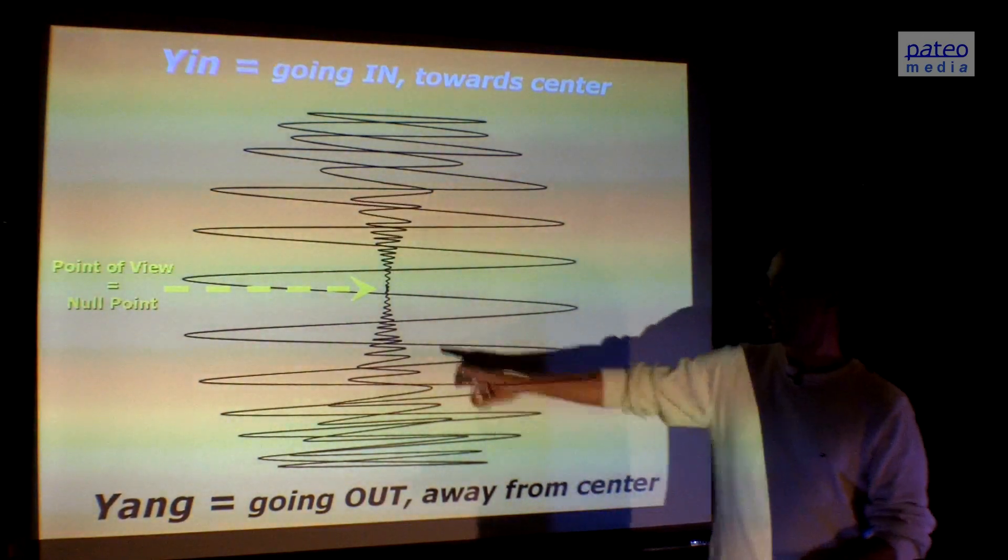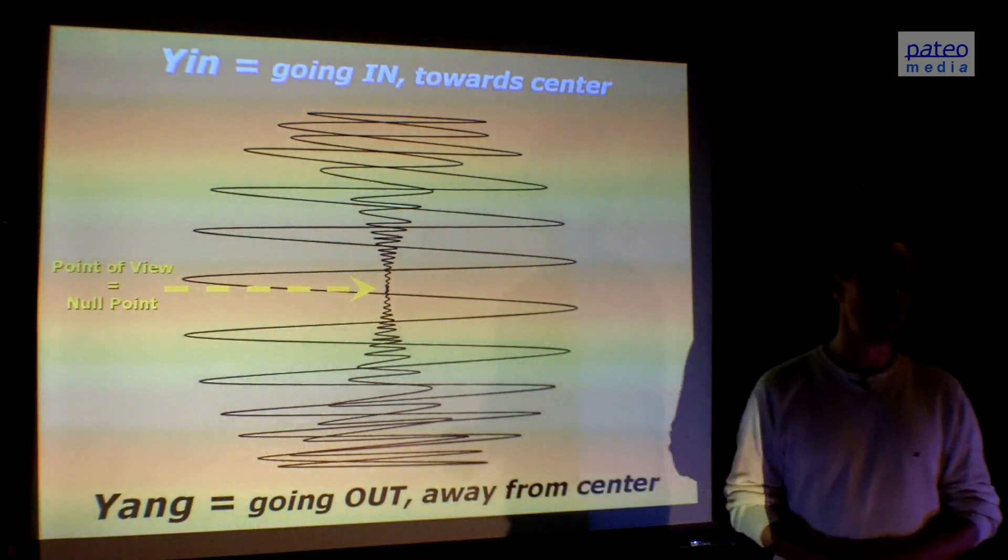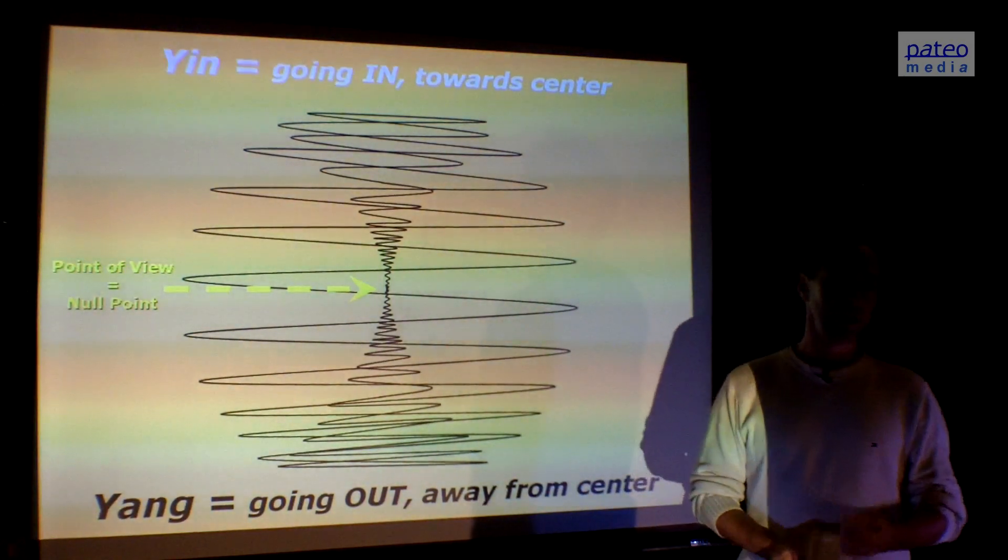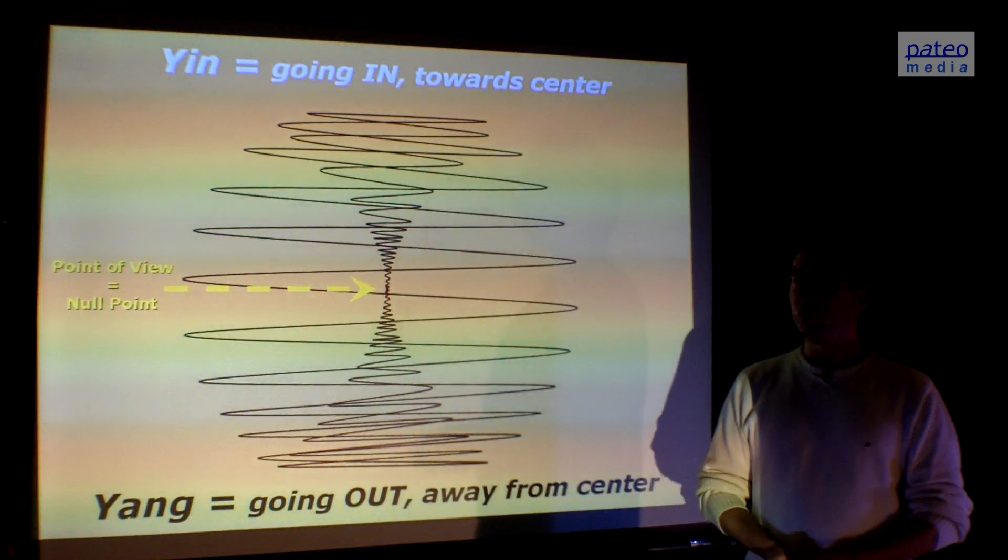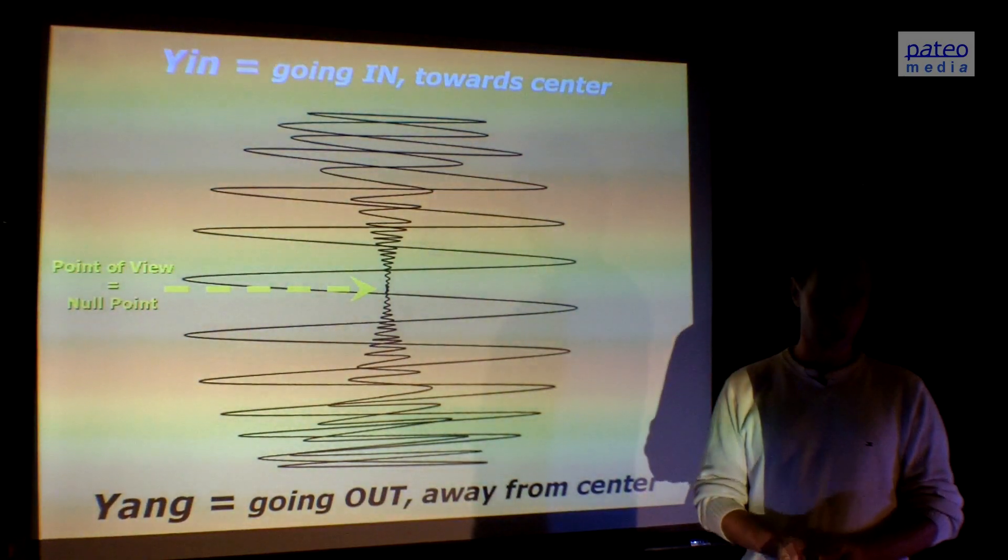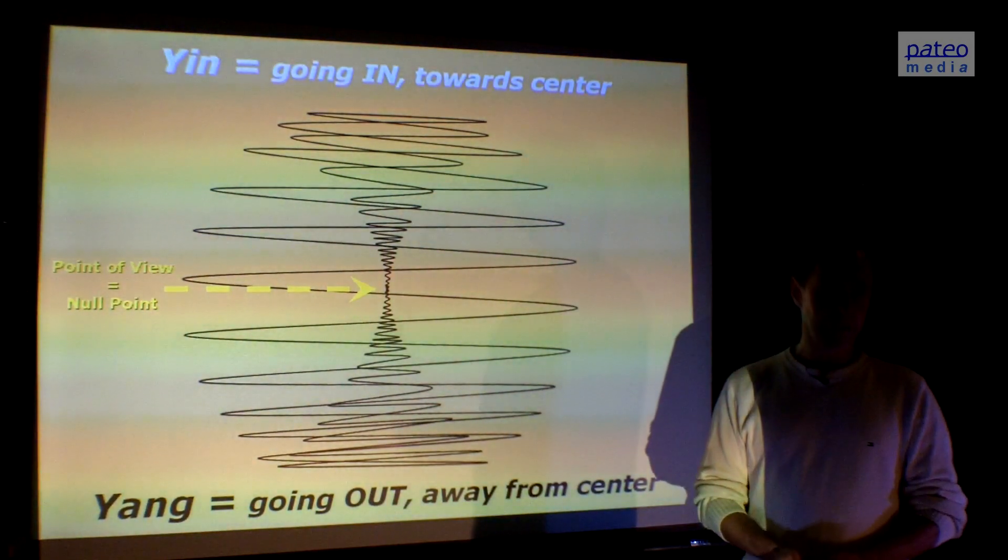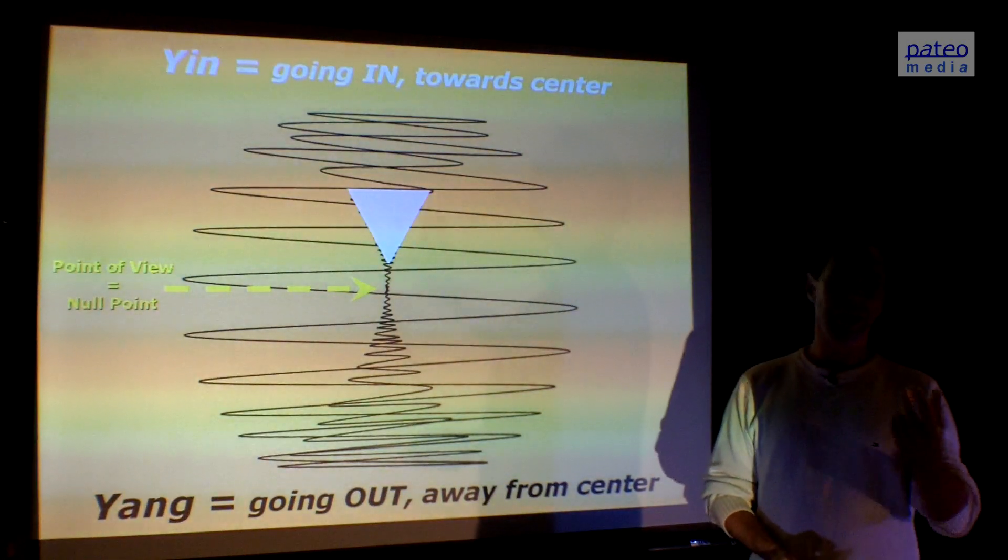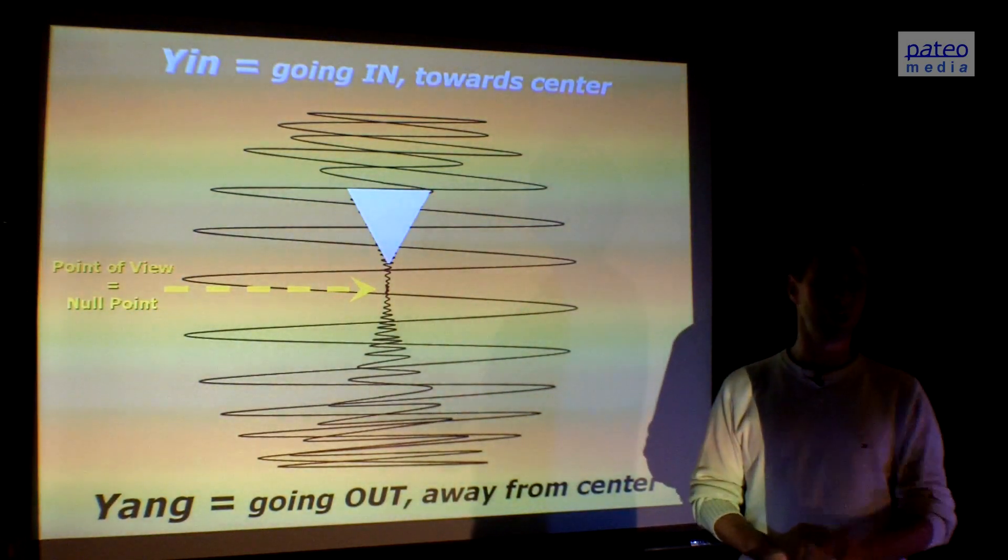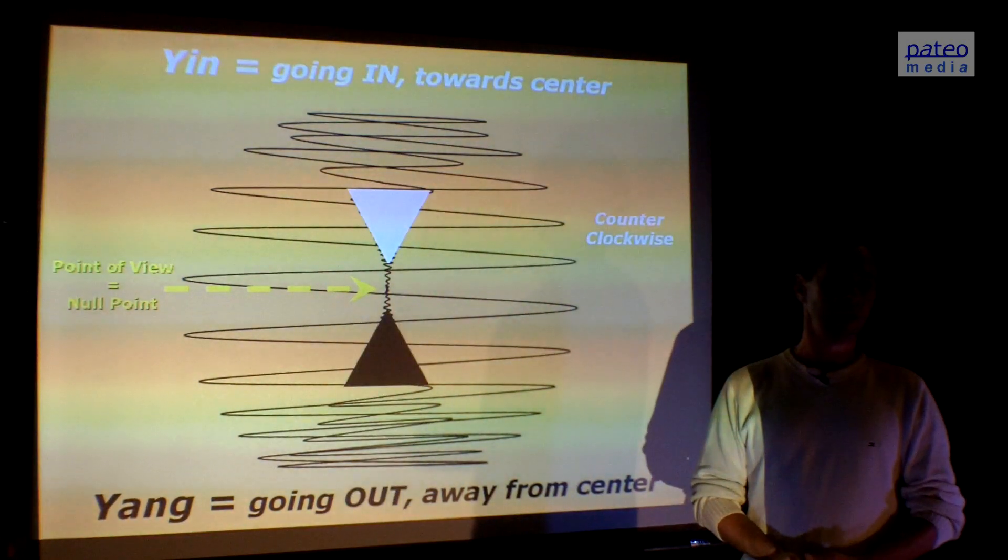Let's position ourselves in the center, in the null point. That's our point of view. What we'll see then, we see energy coming towards us. This can be visualized as white light coming towards us, and it's spiraling counterclockwise.